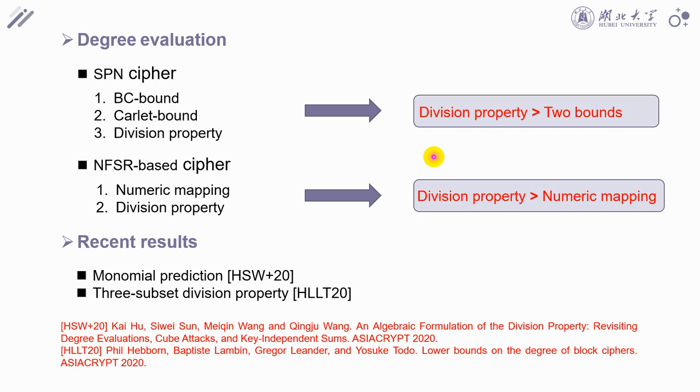In this work, we give an argument on the relationship between the different non-tight methods for algebraic degree evaluation. And we conclude that the BDP method is the optimal one from the accuracy perspective. Additionally, monomial prediction and three-subset division property methods can be utilized to compute the exact degree. But they are time-consuming if you do not try some optimization strategies, because both of them need to enumerate the truth from input propagating to the output.